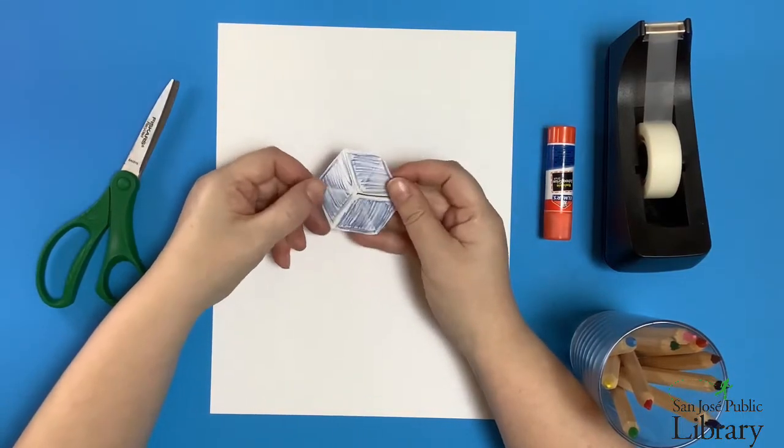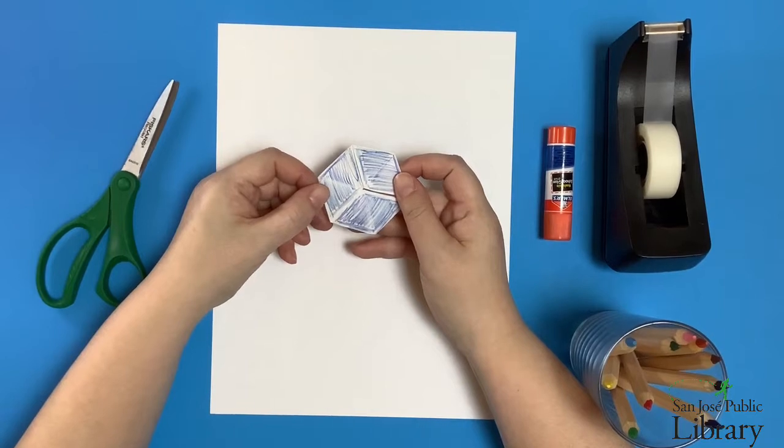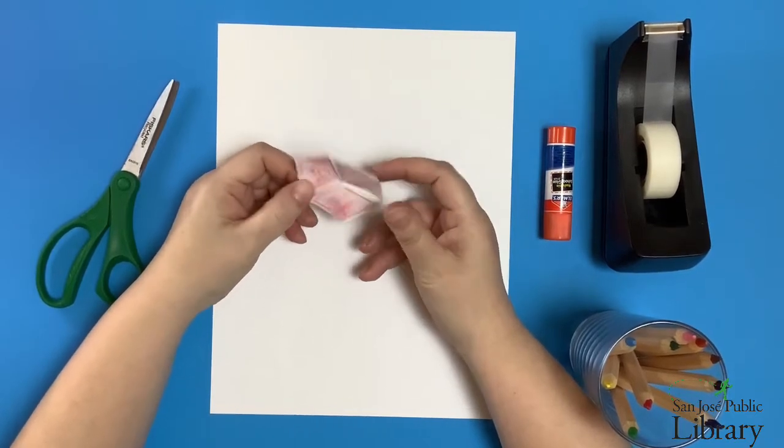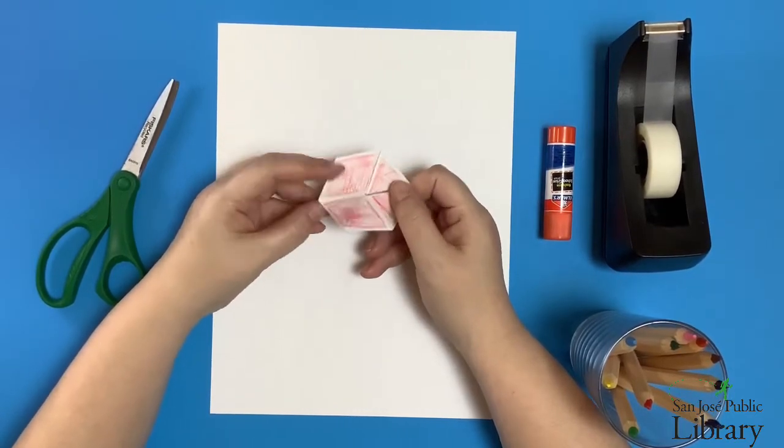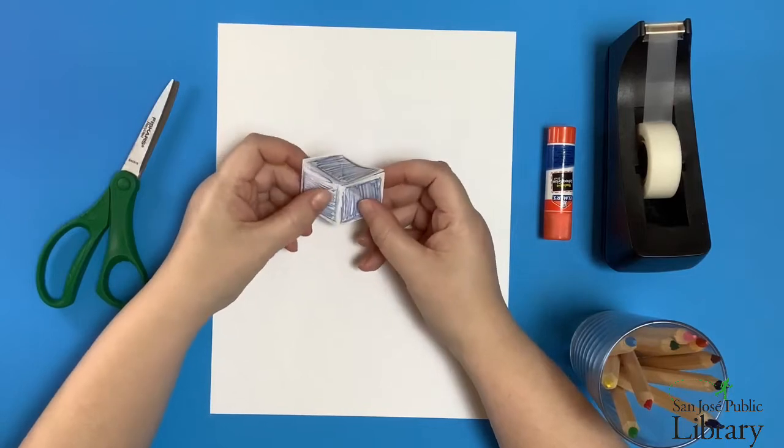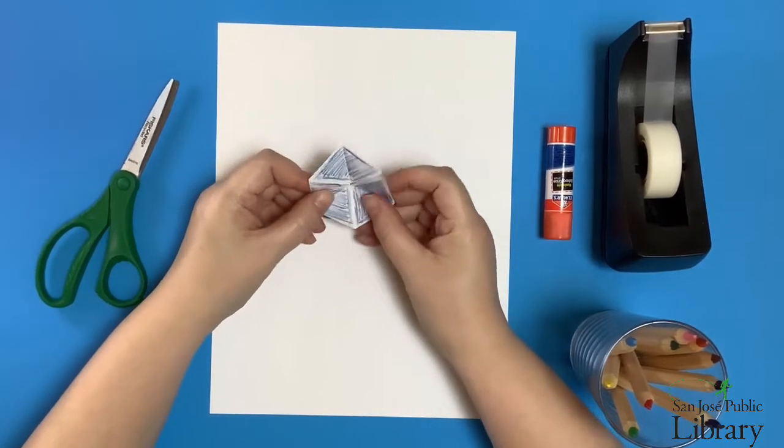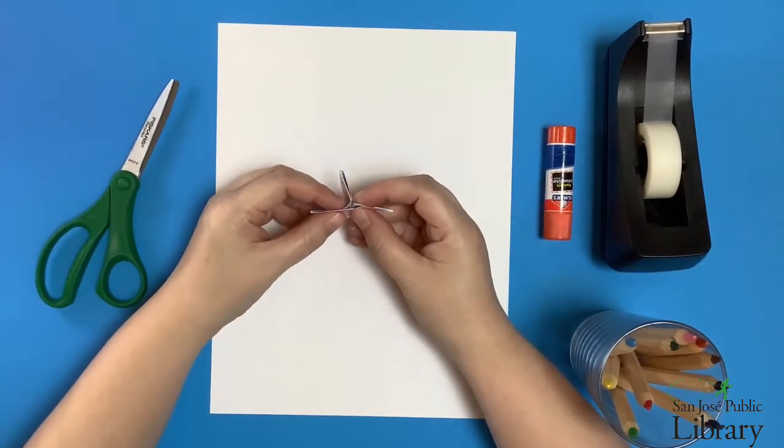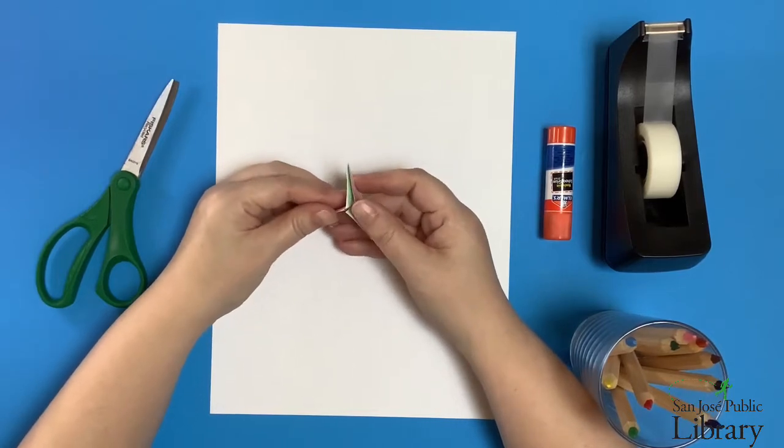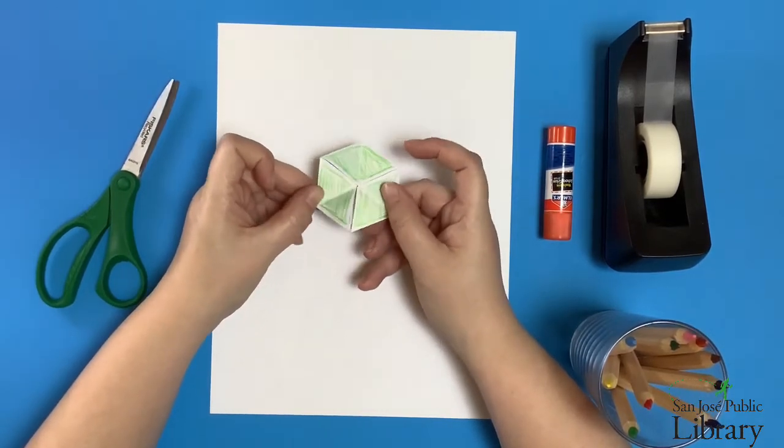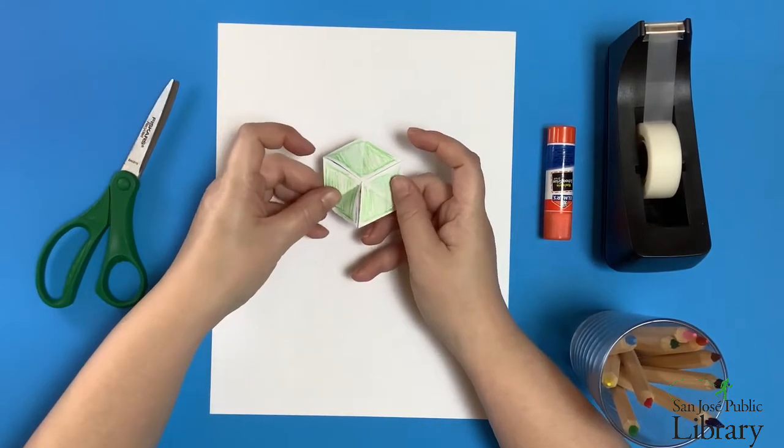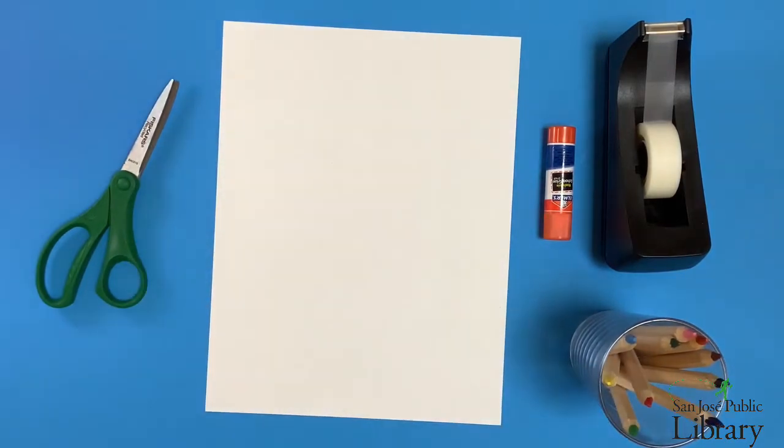A hexaflexagon is a strip of paper that has been folded back on itself to produce a toy that has not just one or two sides like the red and blue sides you see here, but if I bring together three points and unfold it, a third side. So how can a piece of paper have three sides instead of just two? Well, let's explore and find out.